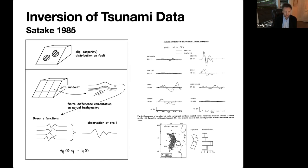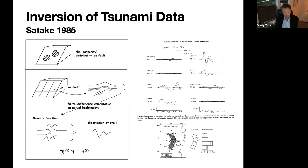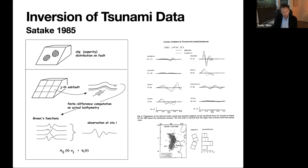He then tried to approximate the observations on land as a combination of these Green's functions. If you do it with several tide gauges and several sub-fault sections, you end up with a series of linear equations where the b_i's are the measurement time series, the matrix A contains the Green's functions, and you solve for the x_j's — the magnitudes of the sub-faults.